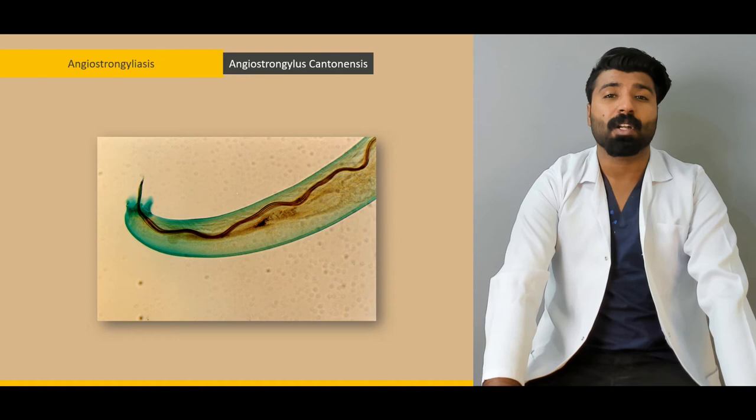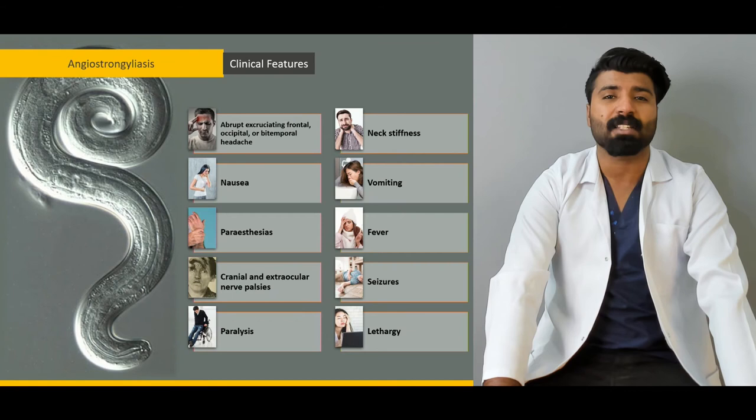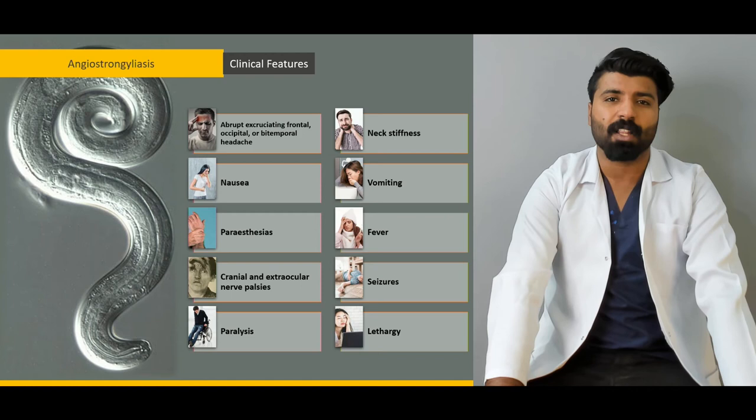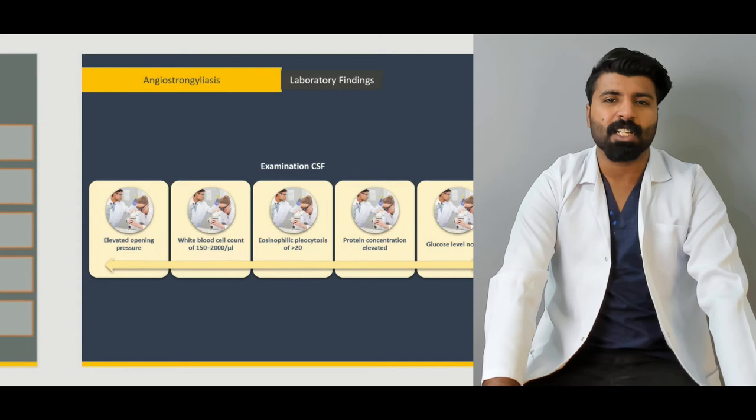Next, we're going to talk about angiostrongyliasis — what is the causative organism, what is the life cycle, and after the life cycle, what clinical features it will present to us with. We're going to talk about how these nematodes lead to the development of eosinophilic meningitis in our cases.